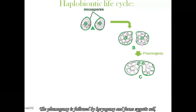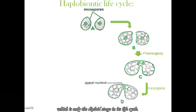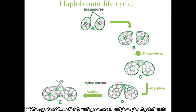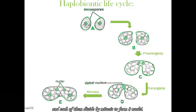Plasmogamy is followed by karyogamy, forming a zygotic cell which is the only diploid stage in the life cycle. The zygotic cell immediately undergoes meiosis and forms 4 haploid nuclei, each of which then divides by mitosis to form 8 nuclei.